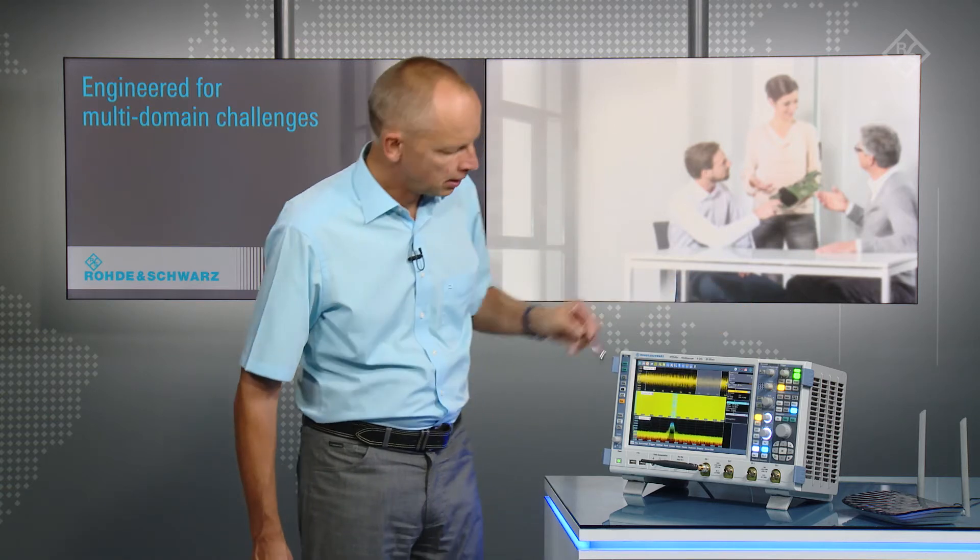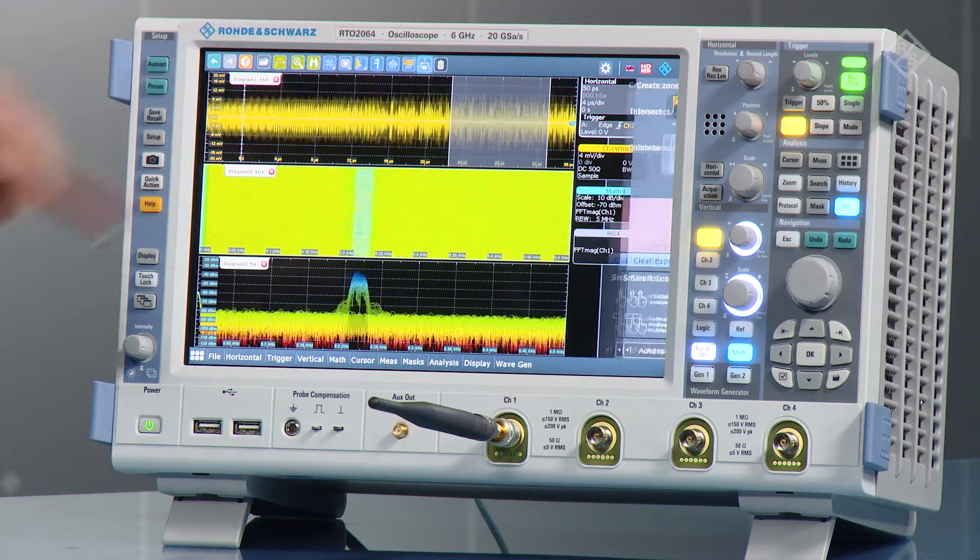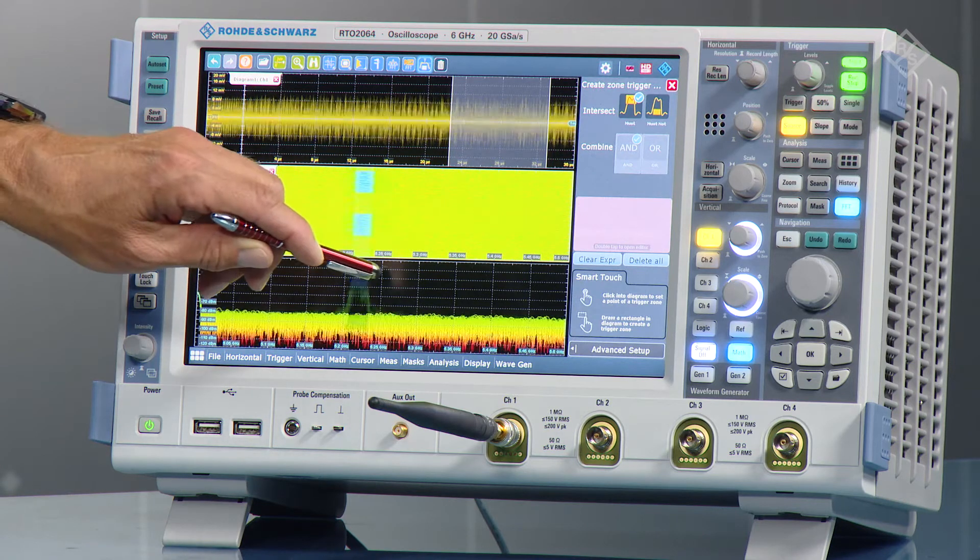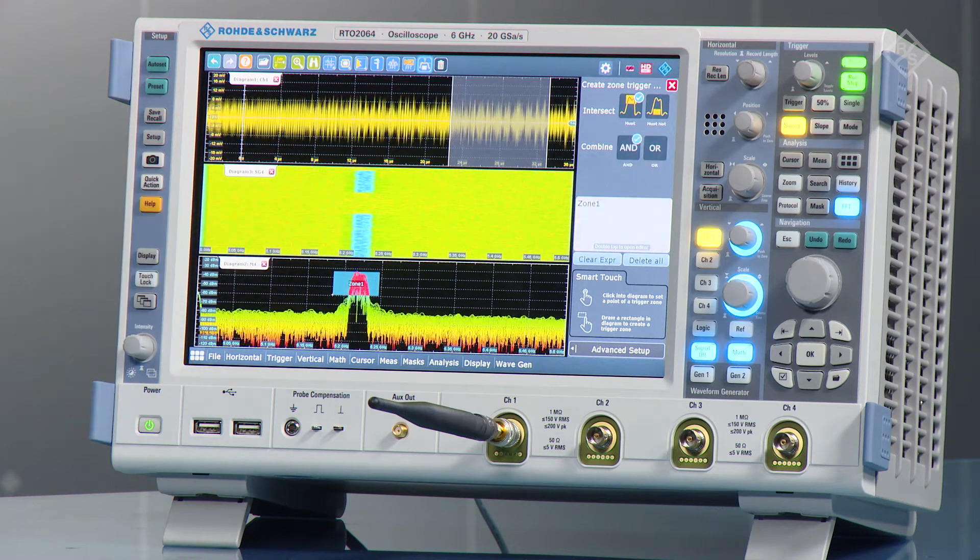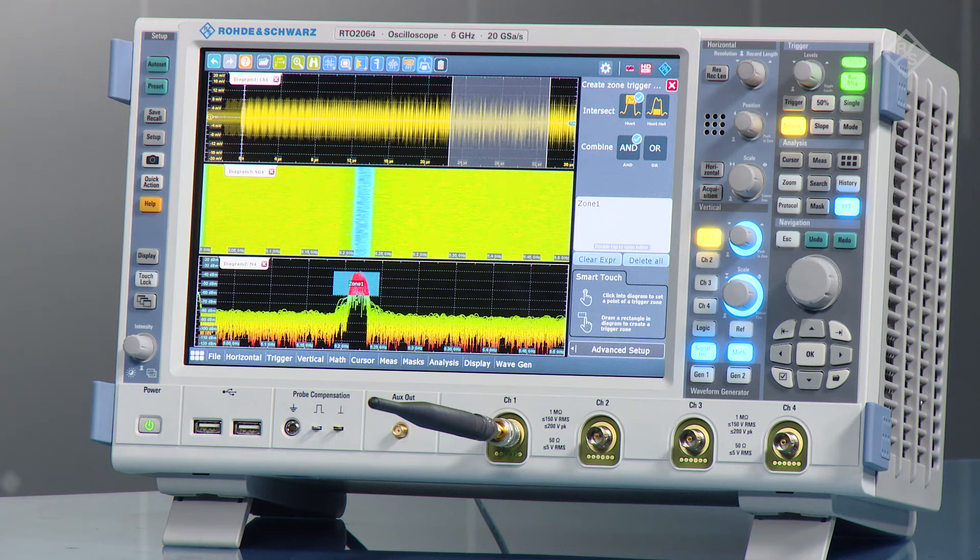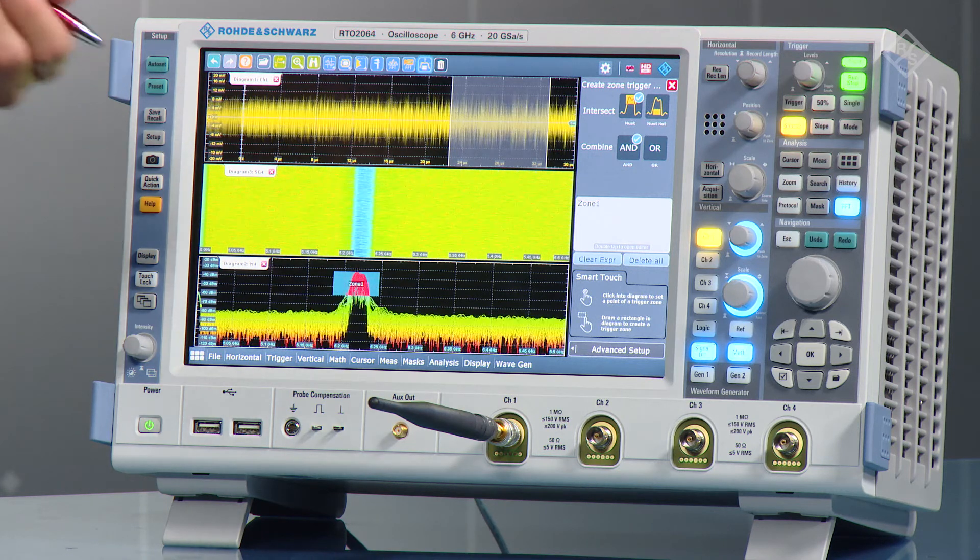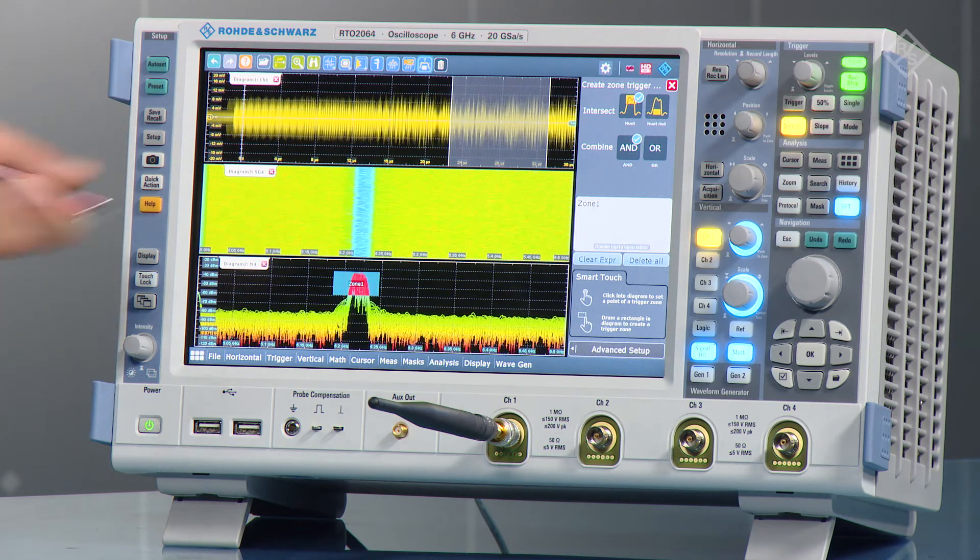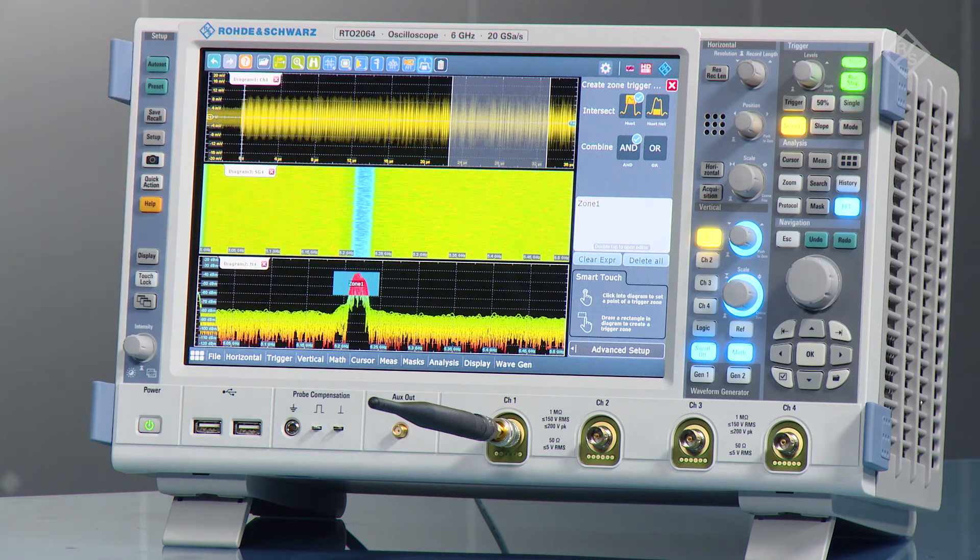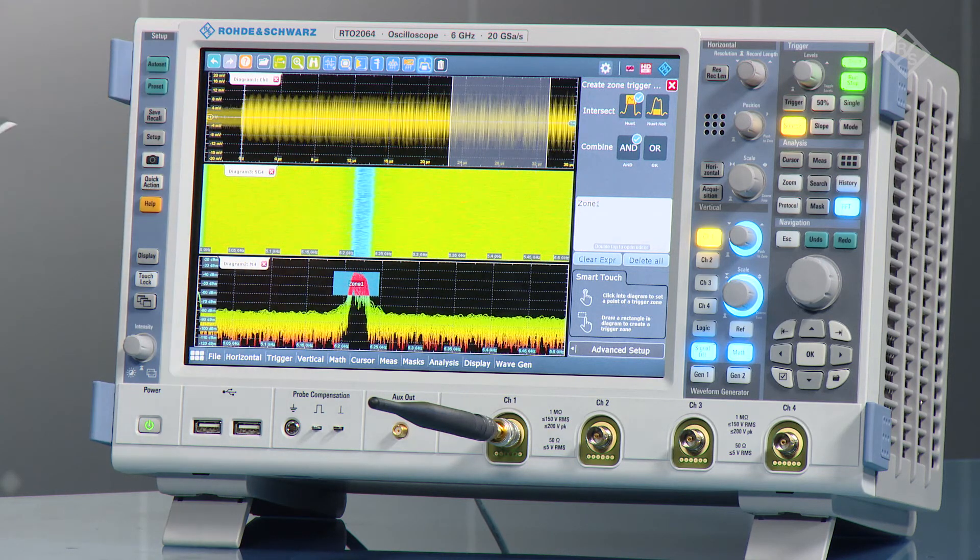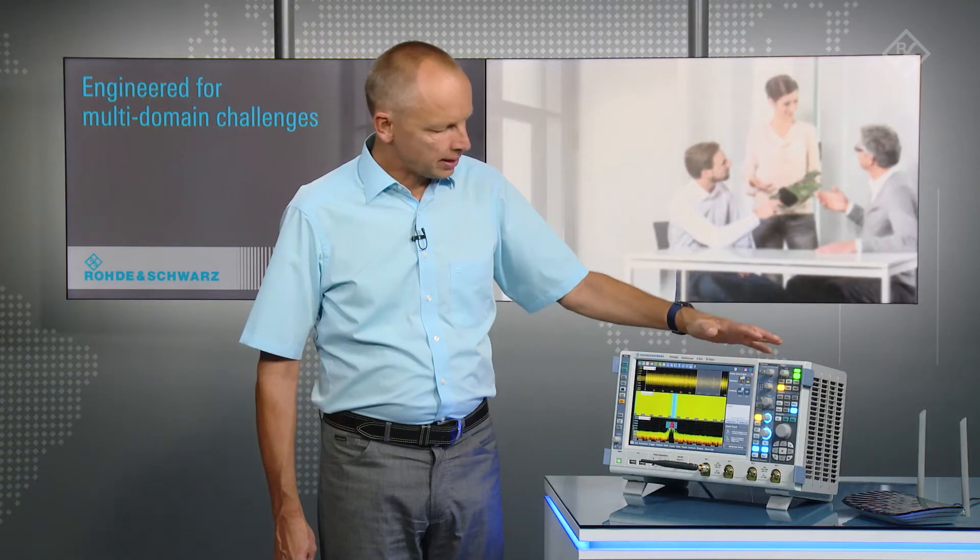Remember, with the RTO oscilloscope, you can trigger in frequency domain with the first zone trigger in time and frequency domain. To do that, activate the zone trigger and draw a zone around that signal that you want to see. And now the scope triggers only when it reaches that frequency. So you only see the 5 GHz Wi-Fi signal that we have selected for trigger.